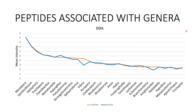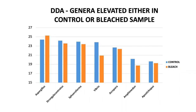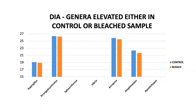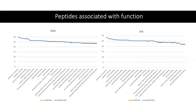We extracted those genera that were elevated in either control or bleach. Here is a bar plot of a few of these genera that we looked at. We tried to look for the same in DIA. However, we saw an opposite trend in Aspergillus and missing values in Symbiodinium, Vibrio, and Apostichopus. As a side note, we did find Vibrio at the family and order level hierarchy.